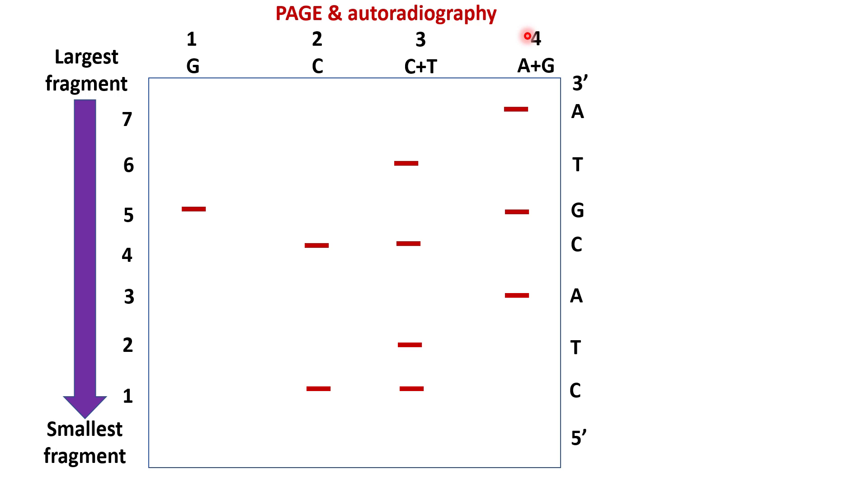Now, let's determine the DNA sequence. This lane contains two bands, one in C and the other in C plus T. Hence, the nucleotide must be C. Next lane represents a single band in C plus T. Hence, the nucleotide is T, since no band is present in tube 2 (C).